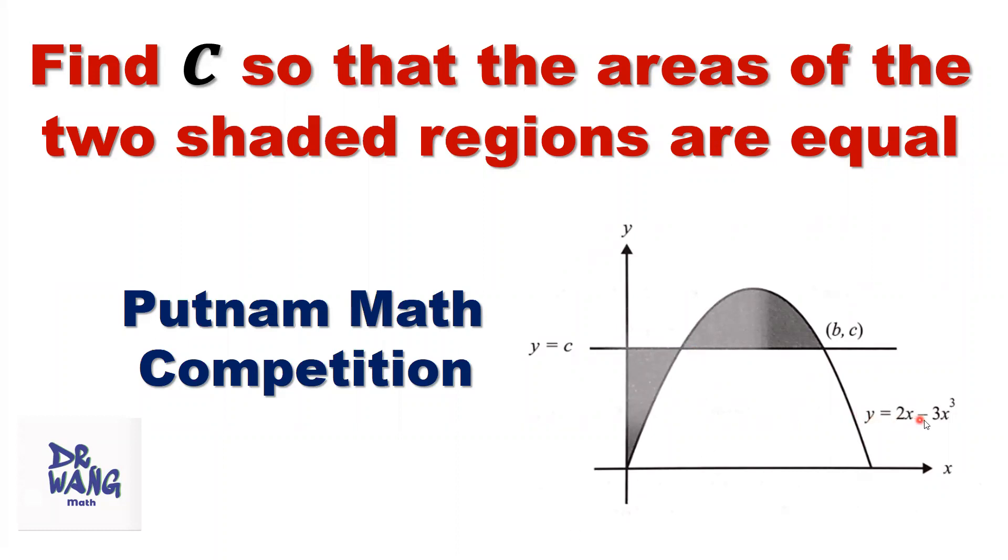y equals 2x minus 3x to the power of 3 is a curve. y equals c is a horizontal line. This line cuts the curve at two points.